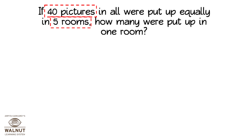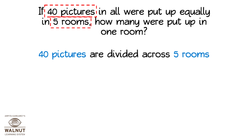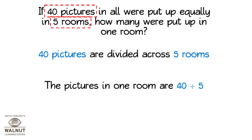So let's divide to find out how many pictures in one room. Each room has 40 divided by five pictures. So 40 divided by five is eight. That means the pictures in one room are eight.